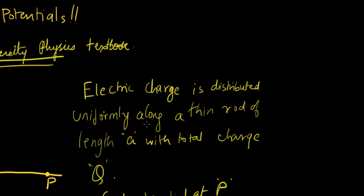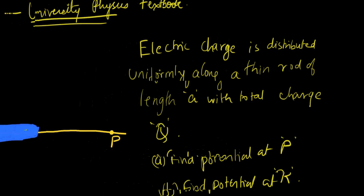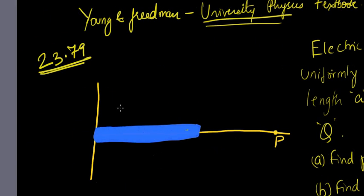We'll discuss it in this session. It's problem 23.79 and what it reads is: Electric charge is distributed uniformly along a thin rod of length A with total charge Q. Find the potential at P. Let's set the question up first and then we can approach solving it.